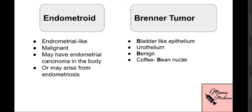Moving on to the less common surface epithelial tumor subtypes: endometrioid and Brenner. Endometrioid has an 'M' and is mostly malignant; Brenner has a 'B' and is benign. The word 'endometrioid' literally means endometrial-like, so its histological features resemble the endometrium. It may be associated with concurrent endometrial carcinoma or may arise from endometriosis. For Brenner tumor, remember all the B's: Brenner, bladder-like epithelium (urothelium), benign, and coffee bean nuclei.